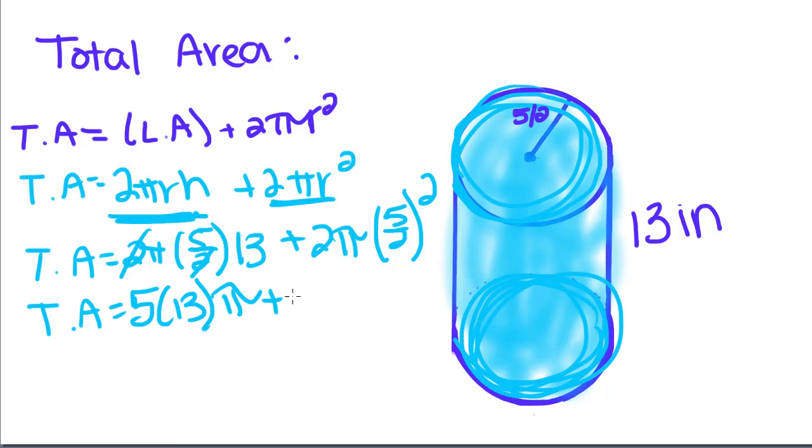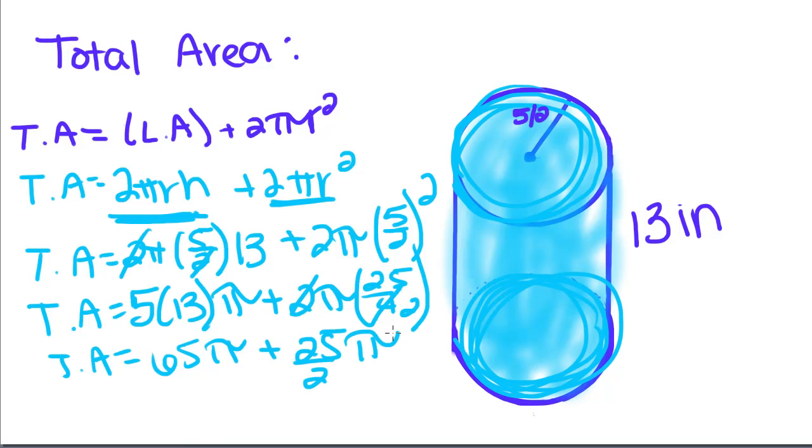plus 2π. If we square this fraction, remember we square the top and the bottom, so we get 25 over 4. So 5 times 13 is 65π, plus if we cancel these, we get plus 25/2 π.